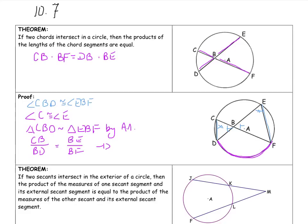And if I cross-multiply, that becomes my statement above. CB times BF equals BD times BE, and I'm done.